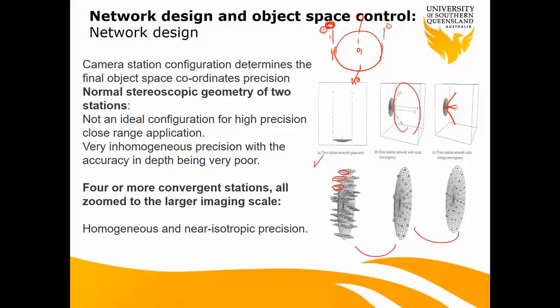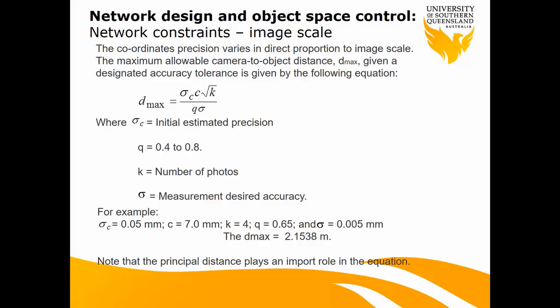The next decision is about object distance — how far you need to put your camera from the object. The maximum object distance can be found using a formula based on the precision you want to achieve, the number of photos, and a constant Q which depends on your camera — whether it's metric or non-metric, that Q can vary. Usually they will give it to you, or you can find it from manufacturer information.